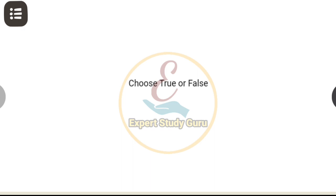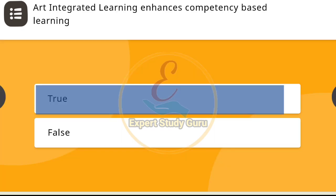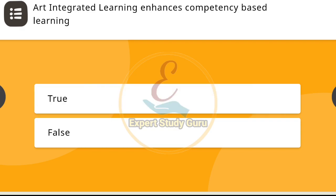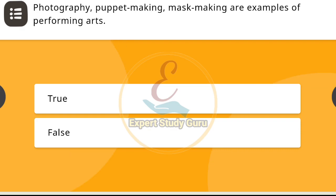We have to choose true or false. First question: Art Integrated Learning is Competency Based Learning. The correct answer is true. Next, photography, puppet making, and mask making are examples of performing arts. The correct answer is false.